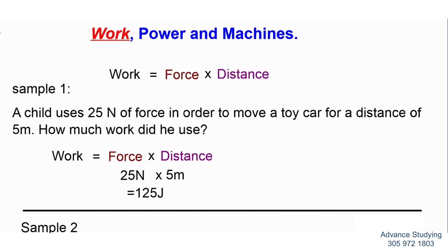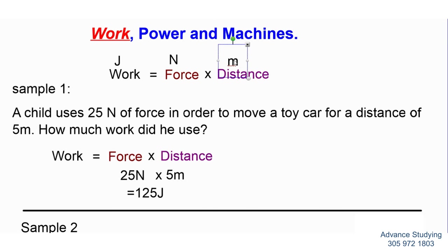Of great importance: work is always found in joules (J), force is always found in newtons (N), and distance in this equation is found in meters. So joules equals newtons times meters — one joule equals newtons times meters. Work equals force (newtons) times distance (meters). I really hope this helps you out.